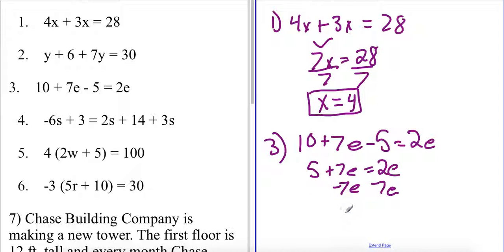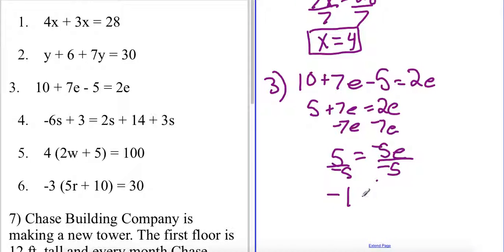And when I divide by my coefficient of negative 5 I'll see that my value of e is equal to negative 1, because 5 divided by negative 5 is going to give me negative 1.